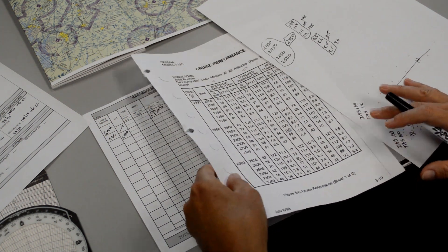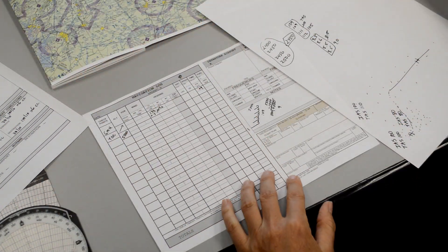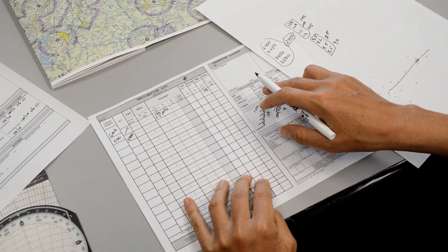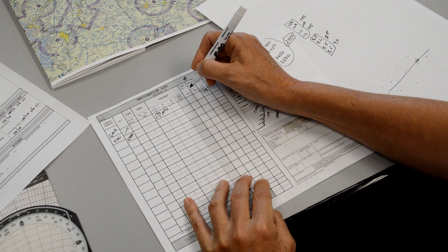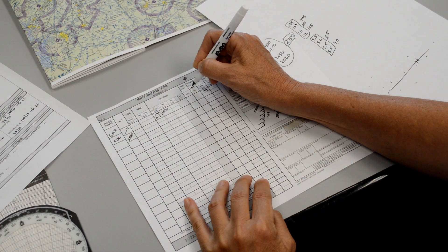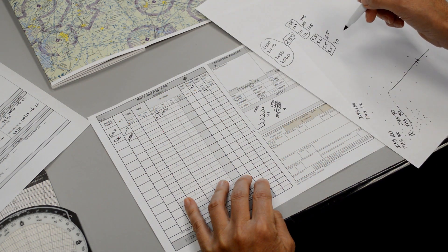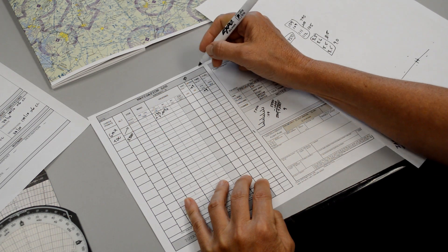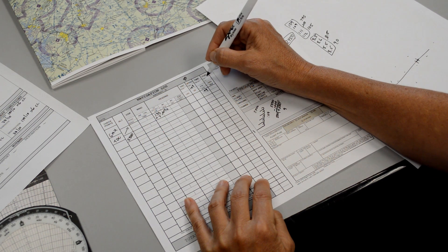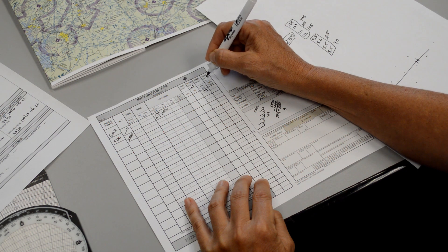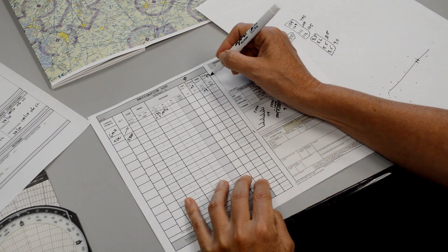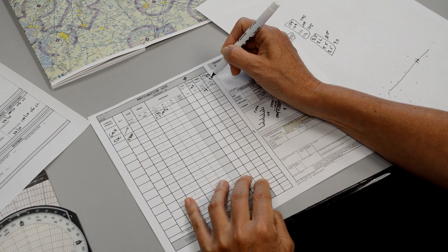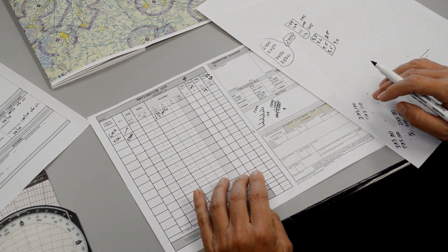Now that we've got a little more information, we can start filling in our navigation log. So we have our true airspeed for the cruise is going to be 105 and our gallons per hour are going to be 9. Now up here in the fuel box, it says gallons on board, which we would write 53, and then gallons per hour, we're going to write 9.0 and we're going to use that for the flight planning.